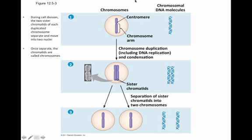What we're illustrating now is what happens during cell division to the chromatids. During cell division, the two sister chromatids of each duplicated chromosome are going to separate and move into individual nuclei. What you're seeing here is the sister chromatids separating, with the chromosomal DNA double helix highlighted, showing where it will end up in the individual nuclei. Once they separate, the chromatids are now called chromosomes again.